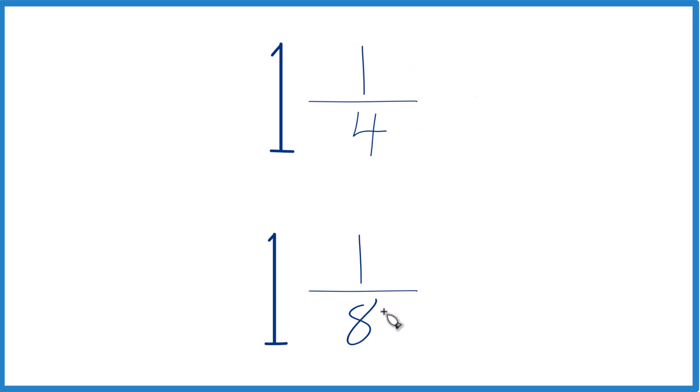And if we can get the same denominator, right now we have 8 and 4, but if that's the same, we can just compare the numerators and we'll know whether 1 and 1/4 is greater than, equal to, or less than 1 and 1/8.